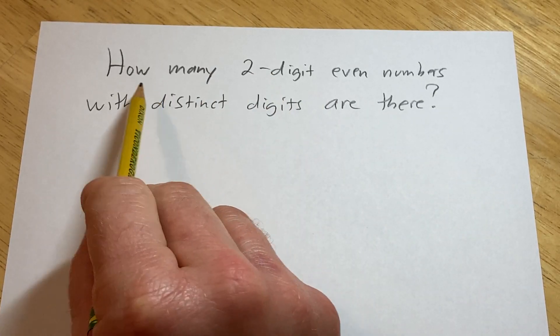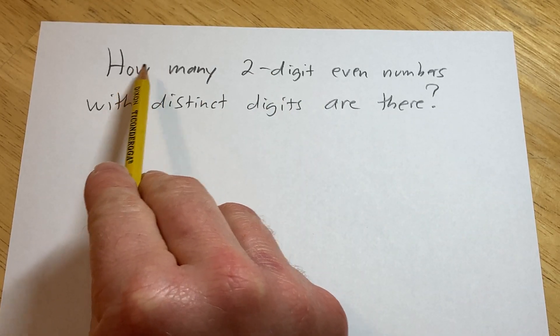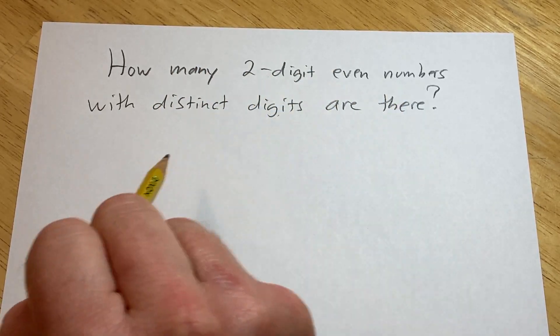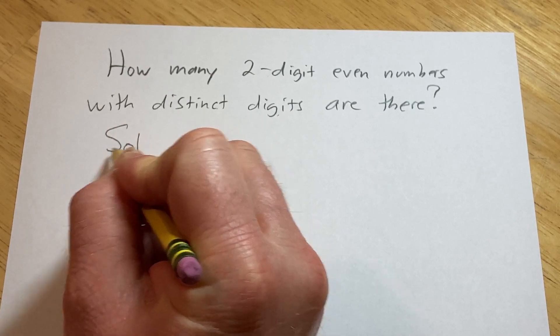Hello, in this video we're going to do a counting problem. The question is, how many two-digit even numbers with distinct digits are there?